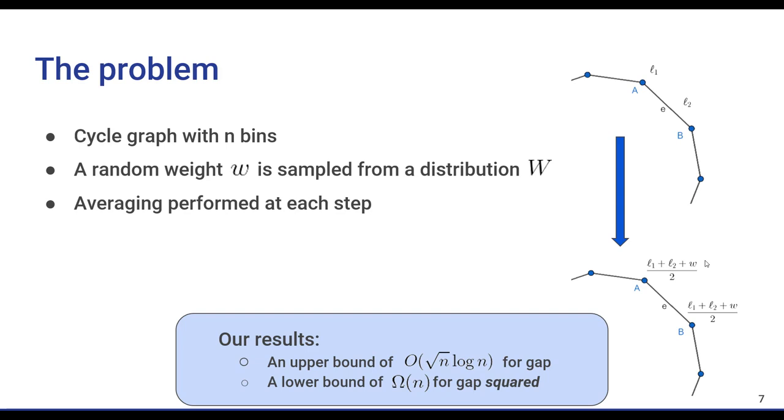Our proof of the results consists of two main ingredients. First, we introduce a new potential function, which we will call the hop potential function. These measure the squared differences in loads for bins with different hop lengths.